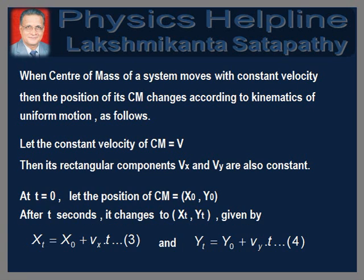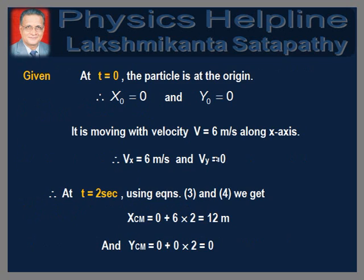Now we can solve the problem using these concepts. It is given that at t equal to 0, the particle is at the origin. Therefore, x0 equal to 0 and y0 equal to 0. It is moving with velocity v equal to 6 meters per second along the x-axis. Therefore, vx equal to 6 meters per second and vy equal to 0. Therefore, at t equal to 2 seconds, using equations 3 and 4, we get xcm equal to 12 meters and ycm equal to 0.